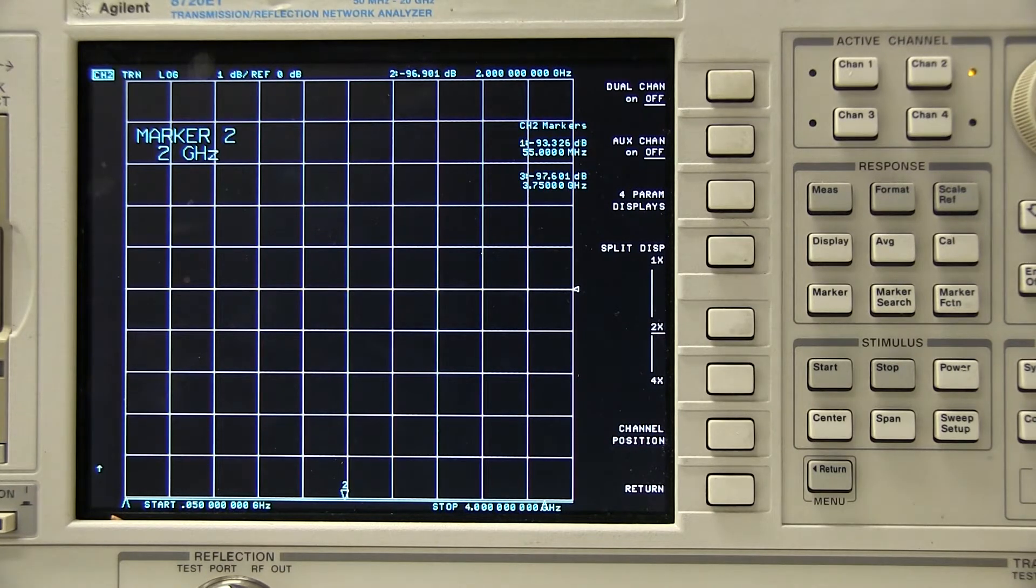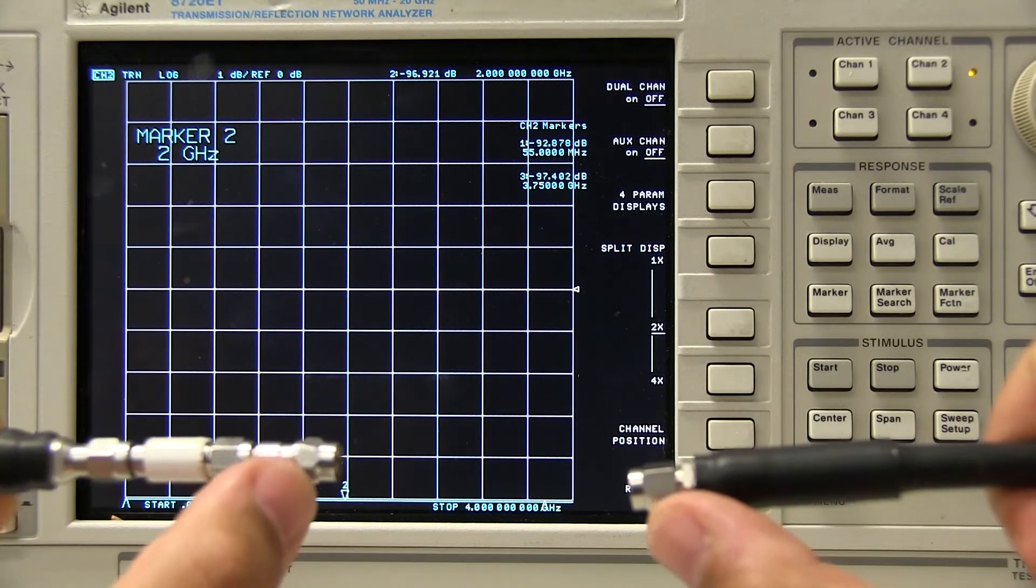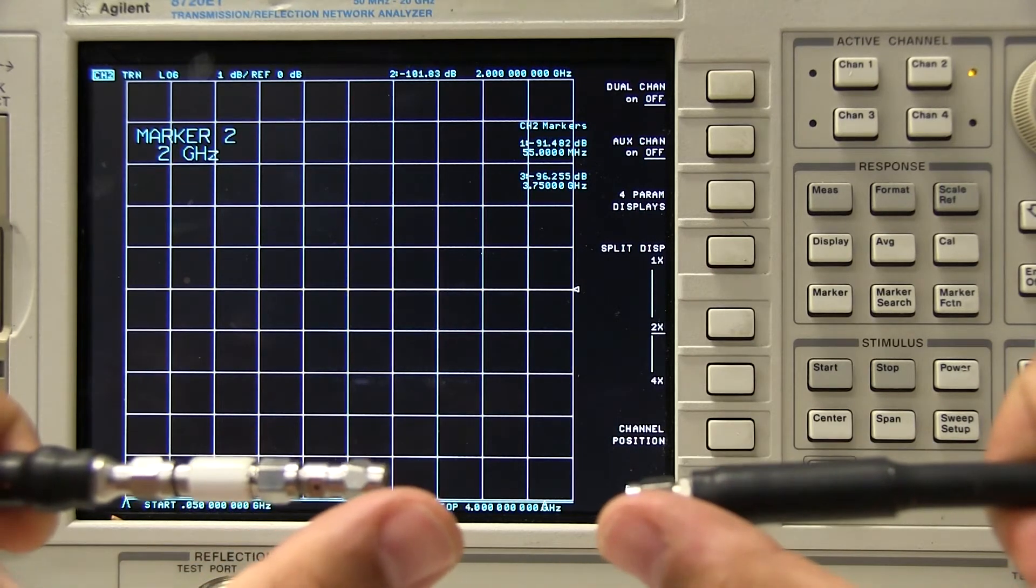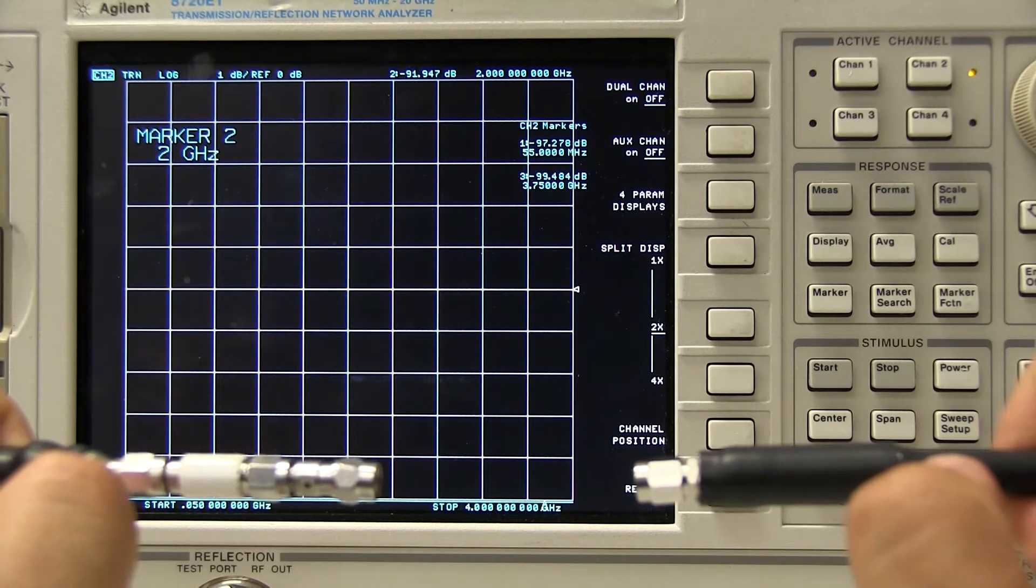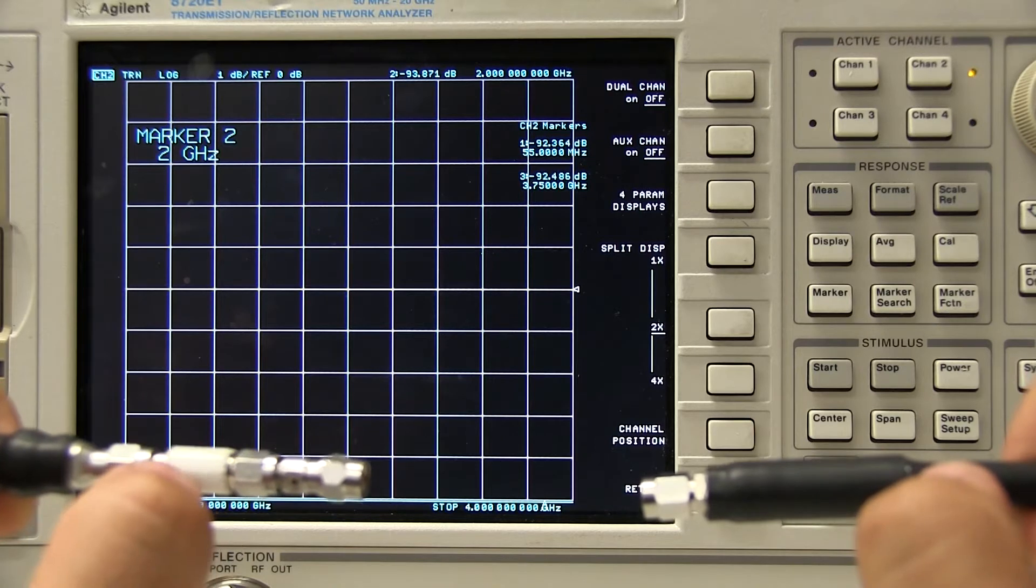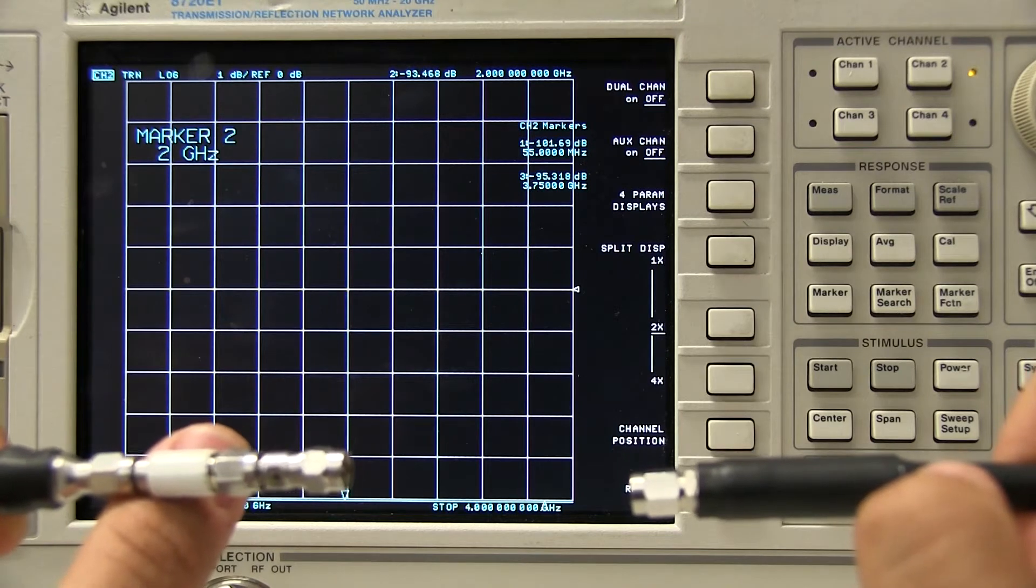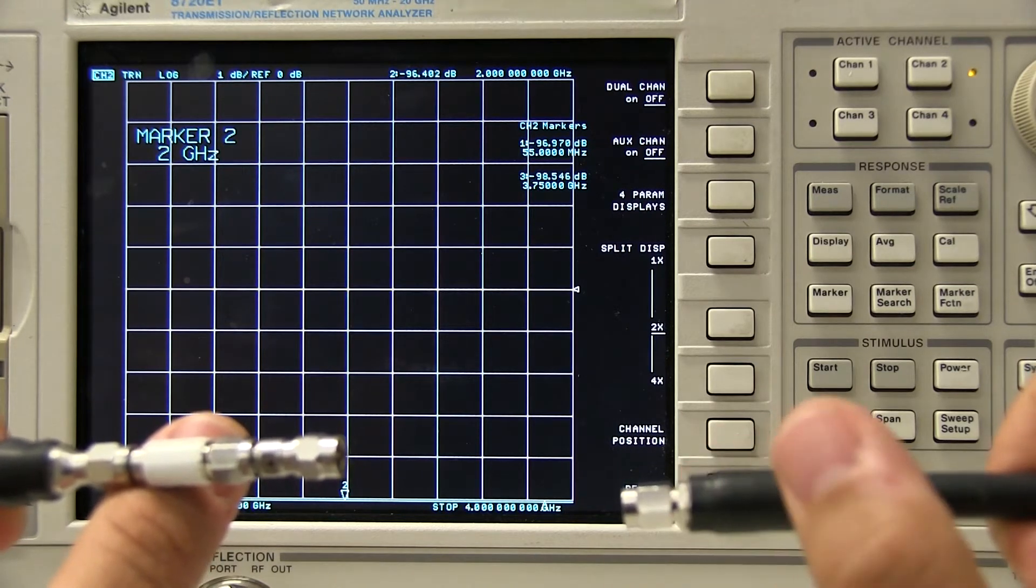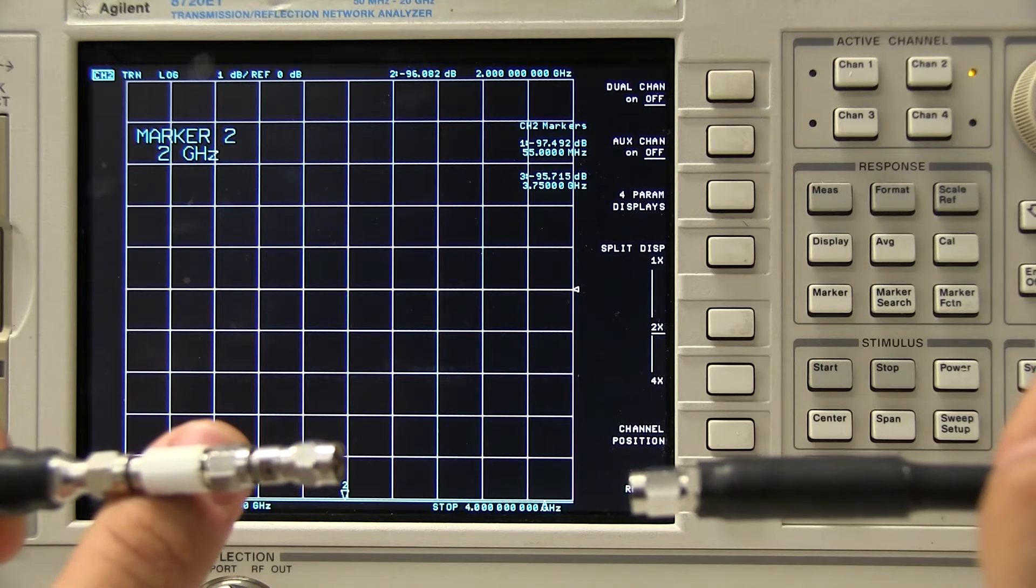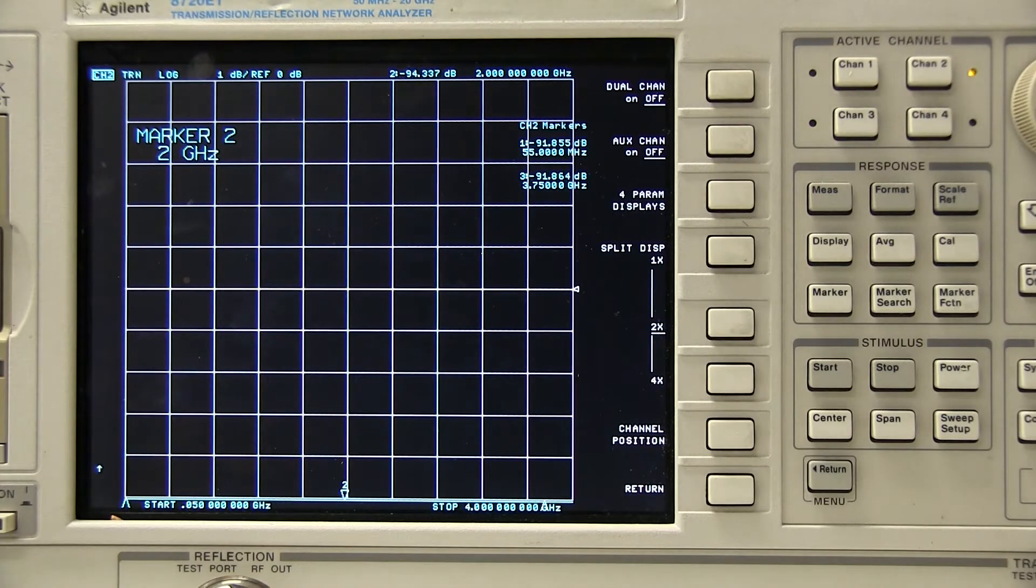This is the manual calibration tutorial. There are other newer, more advanced analyzers that will have a cal box, an e-cal box, e-cal module that they're called, that will connect in between your two ports and automatically switch through very well-calibrated open short loads and throughs, and they'll actually connect to the network analyzer, and the network analyzer will have extra coefficients built in there and actually communicate with that cal module to perform a very accurate calibration. But as I mentioned before, this is the kind of basic 101 version of the calibration.